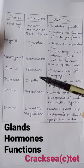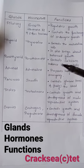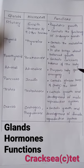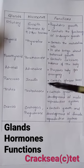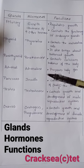Third one: parathyroid. It secretes parathormone and controls the calcium balance of the body. Next one: adrenal gland. It secretes